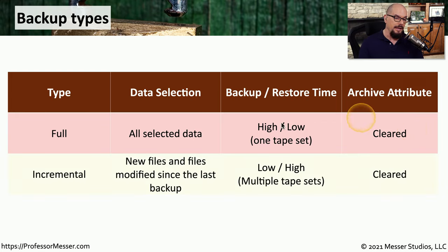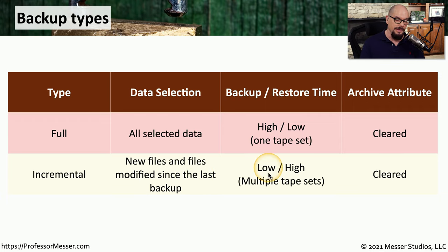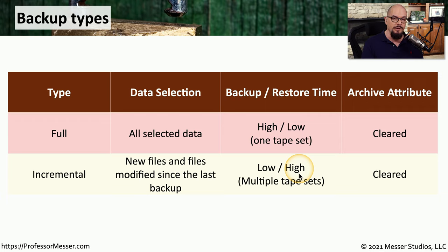An incremental backup is going to back up new files and all files that have been modified since the last incremental backup. The backup time is relatively low because we're only backing up files that have changed, but the restoration time is relatively high because we need to restore from not only the last full backup, but every other incremental backup that's occurred as well.